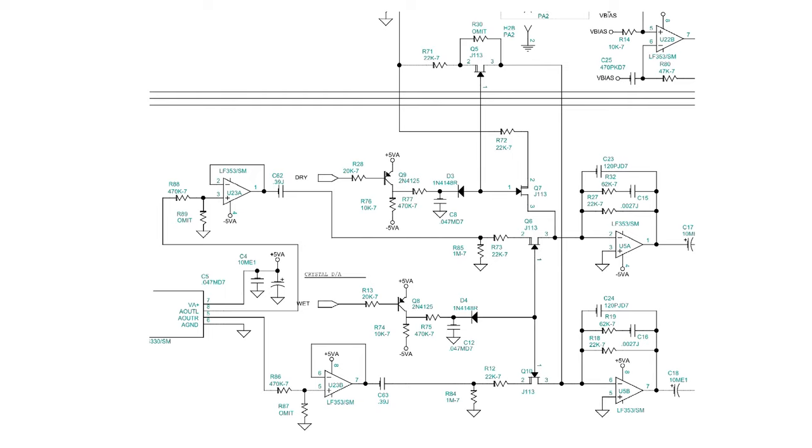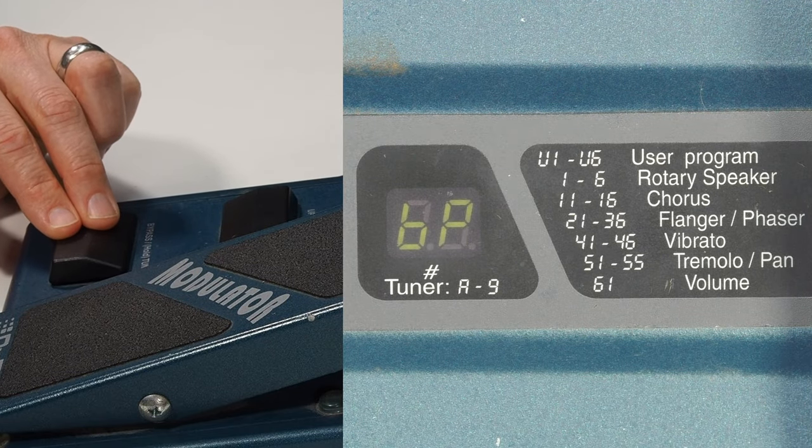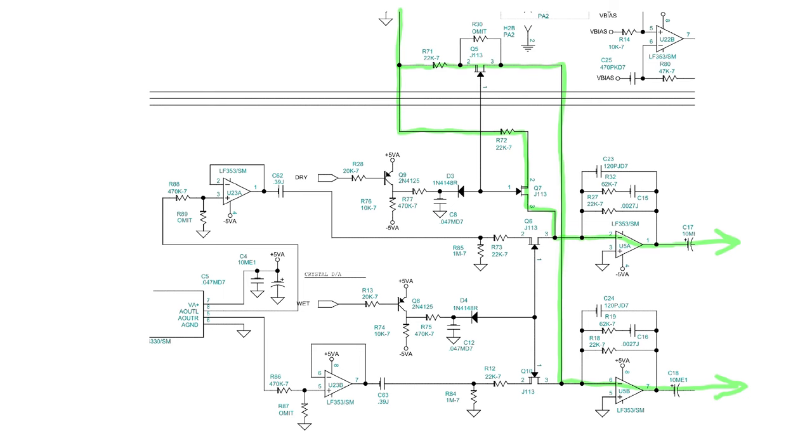After the DAC and the buffers, we see an interesting conglomeration of JFET transistors being used as switches controlled by logic signals from the microcontroller. The two logic signals are labeled wet and dry. The JFETs controlled by the wet signal connect the DSP, or processed output, to the audio output. The JFETs controlled by the dry signal connect the audio input signal to the output. These JFET switches are how the pedal provides its bypass function, which passes the input audio through the pedal unmodified.